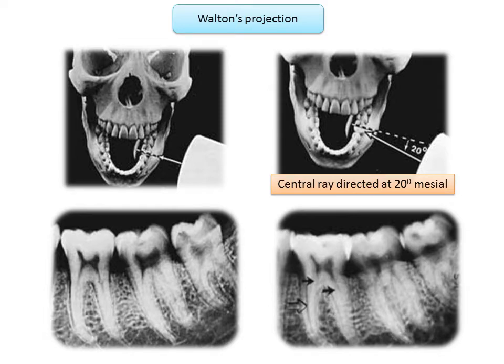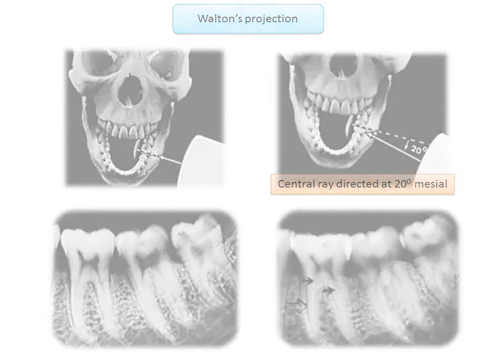This is known as Walton's projection, wherein the roots can be made to open up by directing the central beam 20 to 30 degrees from the mesial, allowing the two canals in each root to be easily discerned. In practice, it is frequently necessary to extract three-dimensional information for better spatial localization of structures.